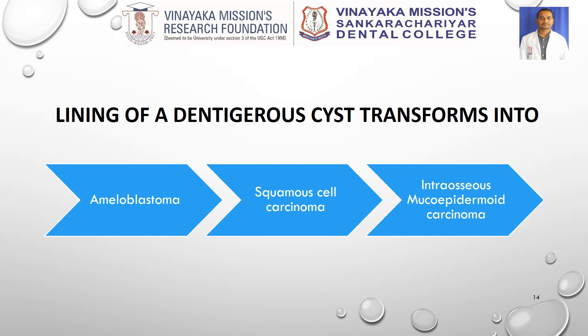In summary: OKC grows in the anterior-posterior direction, most commonly forms a sinus opening, shows very little buccolingual expansion, and is aggressive with high recurrence. Treatment requires peripheral osteotomy, application of Carnoy's solution, and enucleation. The dentigerous cyst shows buccolingual expansion and root resorption, can transform into intraosseous mucoepidermoid carcinoma, and may displace the impacted tooth.